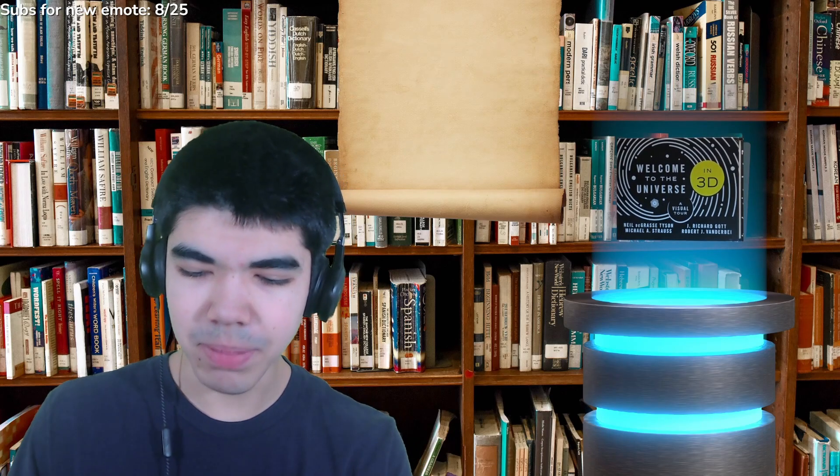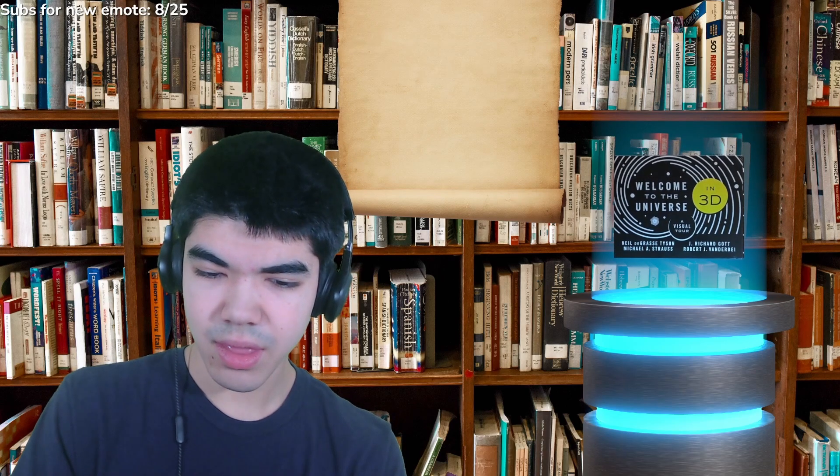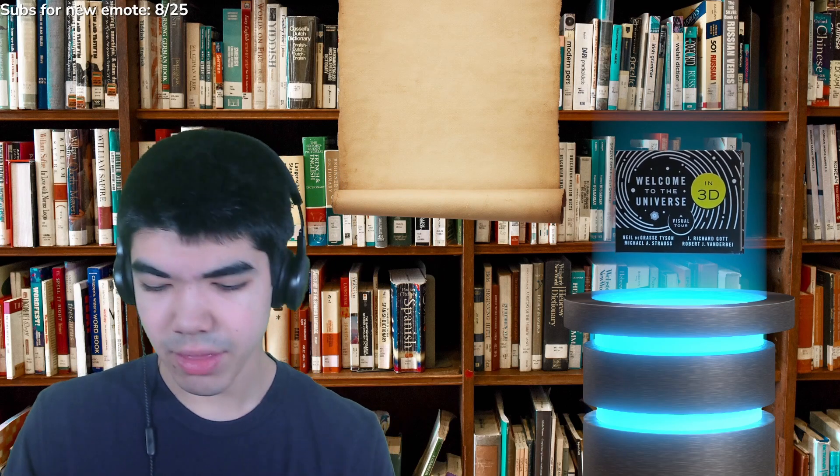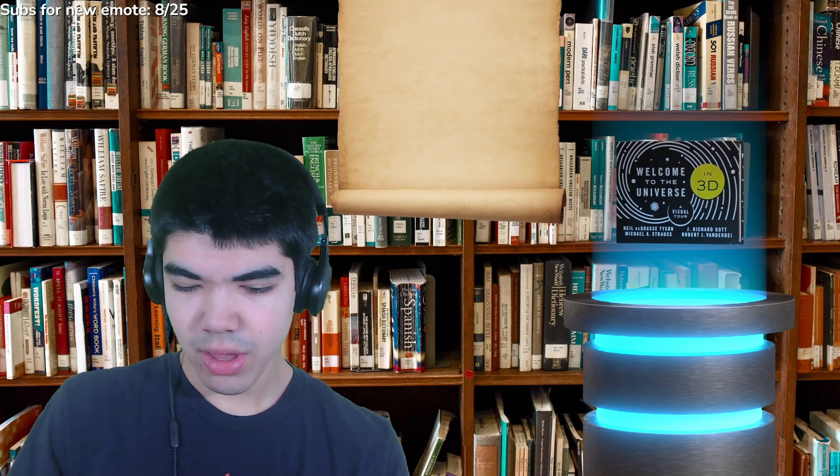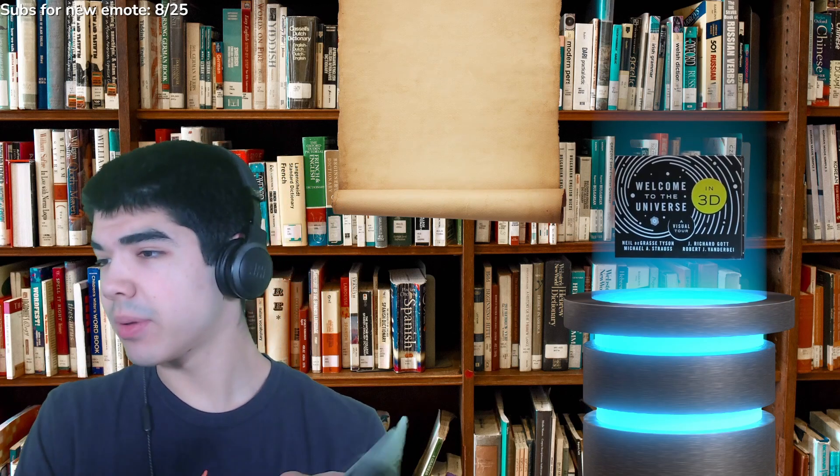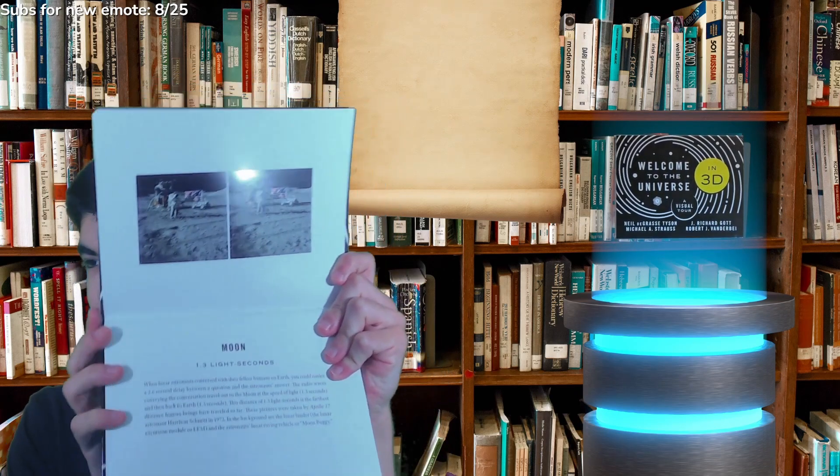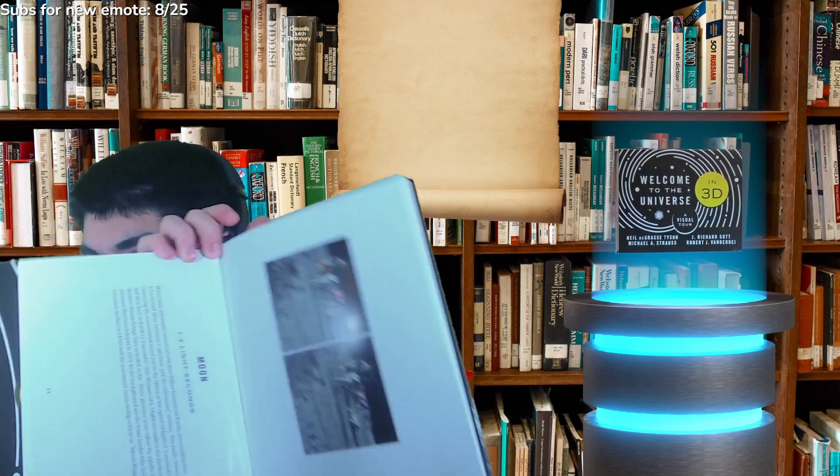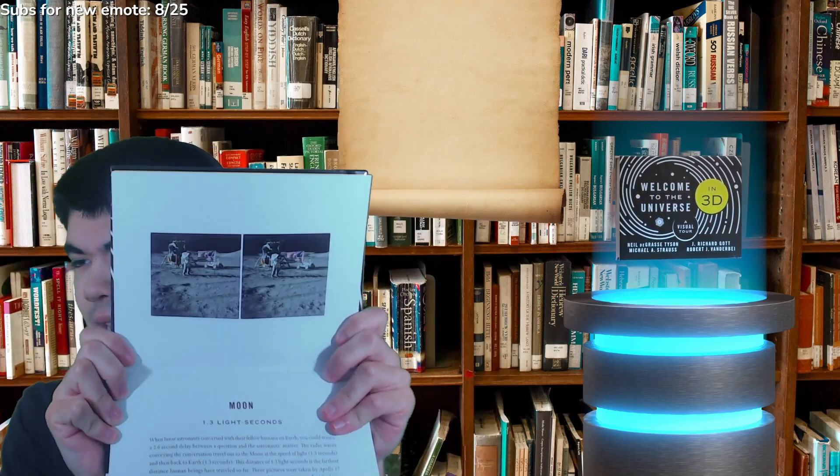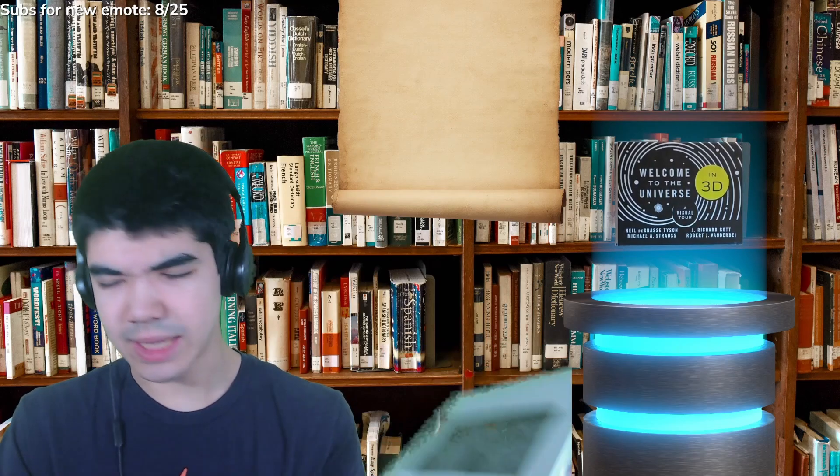which is essentially the book works its way through the universe. It starts with basically images of Earth and then it works its way away from Earth. Each page, so example, here is the Moon. The book is laid out like this, which I think is a bit weird, as opposed to opening like this, it's like this. But that's kind of required for the whole lens thing.